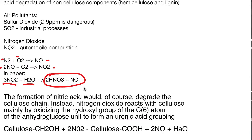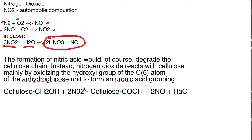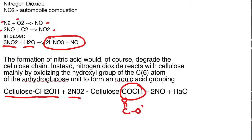The formation of nitric acid would of course degrade the cellulose chain, but nitrogen dioxide also reacts with cellulose by oxidizing the hydroxyl group of the C6 atom — the sixth atom from the right on the anhydroglucose unit I drew last time — to form something called uronic acid. You can see that this group is acidic: the hydrogen pops off, similar to vinegar. That's one of the ways NO₂ makes the paper more acidic even without forming nitric acid.